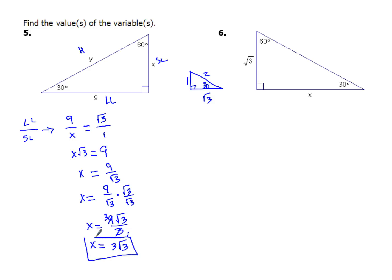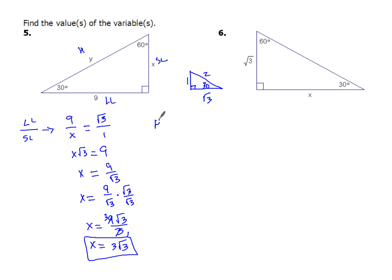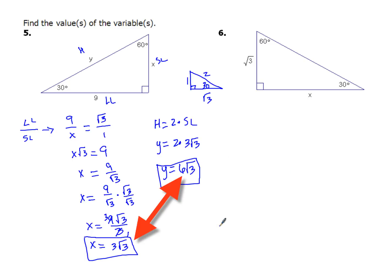That's one way you could do this problem. To find the hypotenuse, notice in my reference triangle I have a 2 to 1 ratio. So the hypotenuse is double whatever the short leg is. The hypotenuse is represented by y, and my short leg I just found is 3 square roots of 3. When I multiply that together, y gets a value of 6 square roots of 3. That's the 2 to 1 ratio — my hypotenuse is twice as long as my short leg.